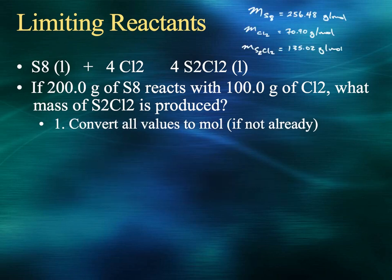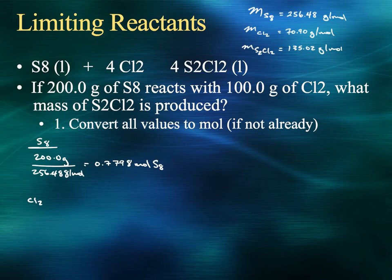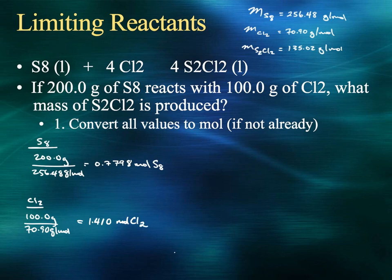Step 1 — convert all values to moles. For S8: 200.0 grams divided by the molar mass of 256.48 grams per mole gives 0.7798 moles of S8. For Cl2: 100.0 grams divided by its molar mass of 70.90 grams per mole gives 1.410 moles of Cl2.